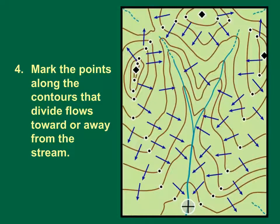The fourth step in the watershed delineation process is to mark the points along the contours that divide flows toward or away from the stream or its tributaries above the point of interest. Again, it is best to mark the points systematically by going either clockwise or counterclockwise around the basin from hilltop to hilltop.